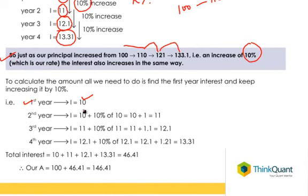So the second year this is going to be increased by 10 percent, so 10 plus 10 percent of 10, which is 11. Now this is going to be increased by 10 percent, so 11 plus 1.1 equals 12.1. And the fourth year this is going to increase by 10 percent, which is 13.31.